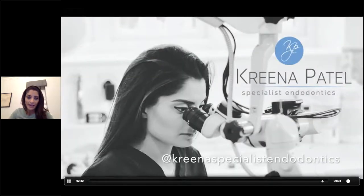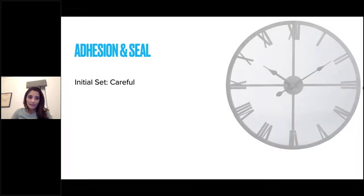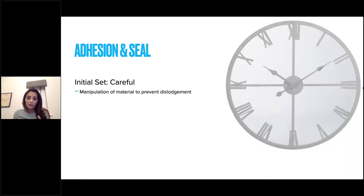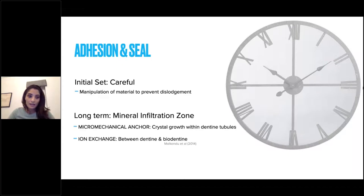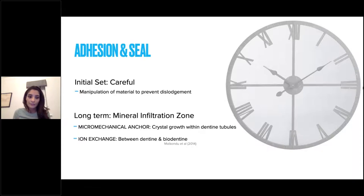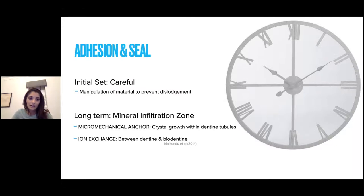Be careful when removing any Biodentine from the cavity walls — the initial bond of Biodentine to dentine takes time to develop fully. If it gets on the walls, very carefully remove it without touching the bulk. However, the long-term seal of Biodentine to dentine is excellent — crystal growth occurs within the dentinal tubules and ion exchange between dentine and Biodentine creates a very good long-term seal. In a two-stage technique, when you come back a couple of weeks later, you don't need to worry — it's very well sealed.